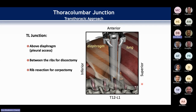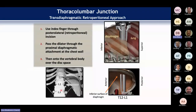The vast majority of corpectomies, particularly for trauma, occur at the TL junction. We need to know how to manage these and what we're going to encounter. At the TL junction we can be above the diaphragm to access the pleural space, between the ribs for a discectomy, and for a corpectomy we need to do rib resection to get after this.